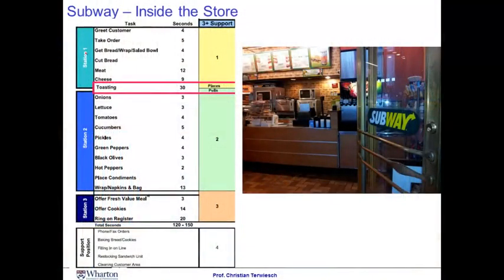Now, time to go inside the restaurant. From training materials that Subway kindly shared with me, I know there are a couple of tasks that need to be carried out to make a sandwich. There are three workers and three stations making Subway sandwiches in the store at this hour. The work starts at station one with greeting the customer, which takes four seconds, followed by five seconds to take the order. Adding up all the activities at station one gives us four plus five plus four plus three plus twelve plus nine, which equals 37 seconds per customer.